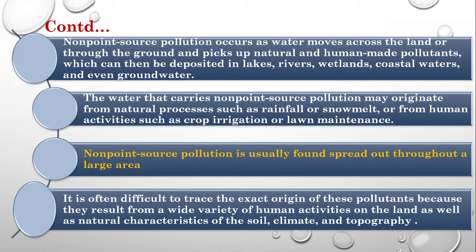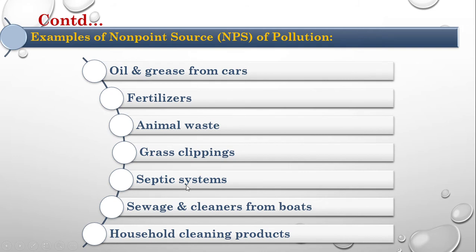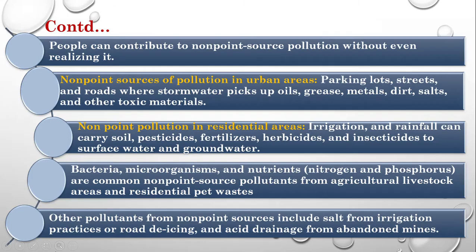Non-point source pollution is mainly caused due to the movement of water through different areas, and it is often difficult to trace the exact origin of these pollutants. Examples include oil and grease from cars, fertilizers, animal waste, grass clippings, and septic systems.